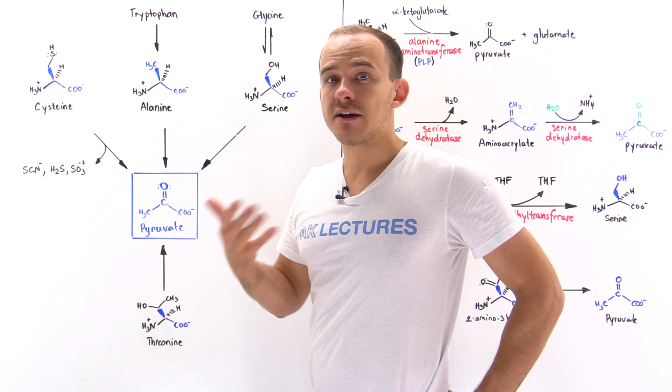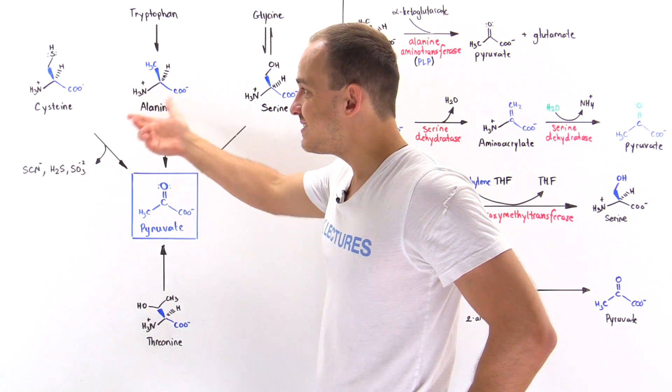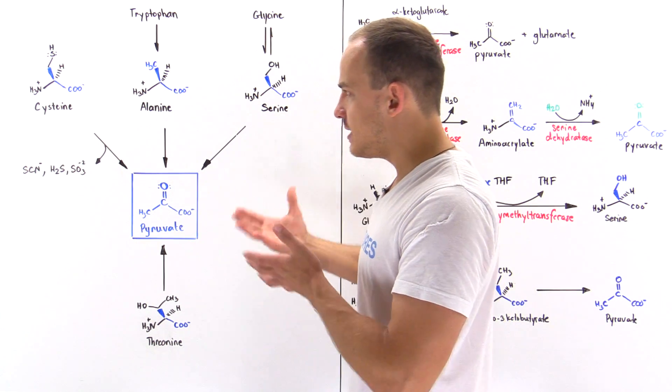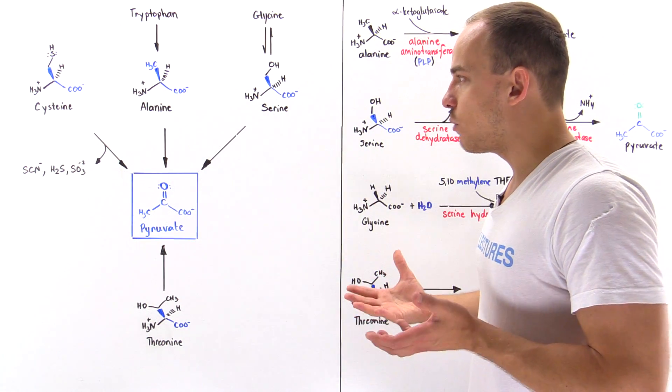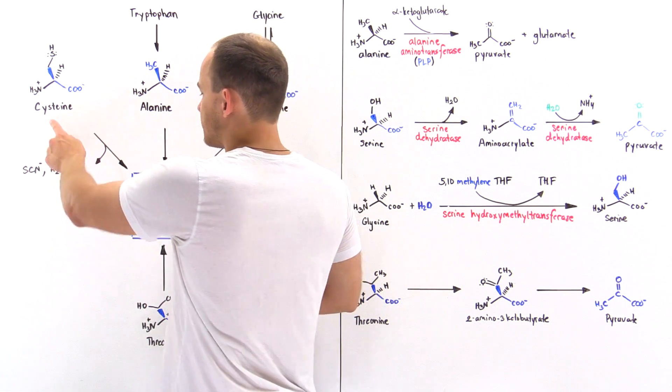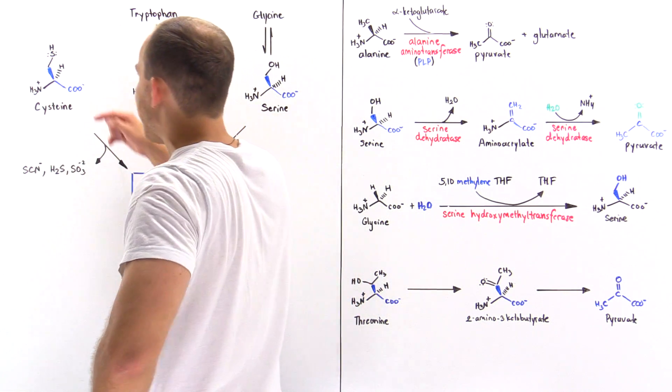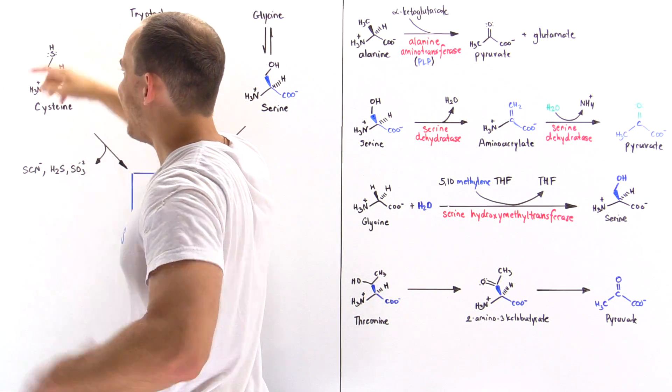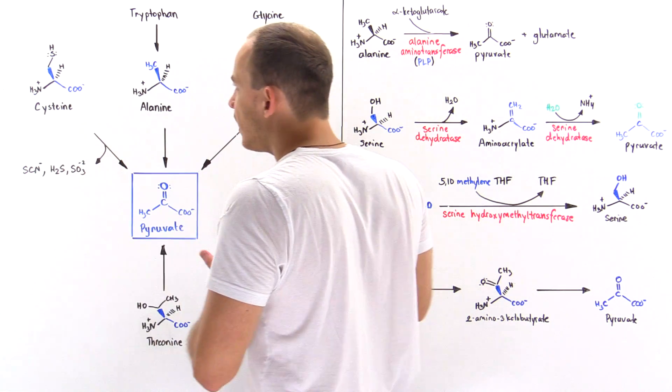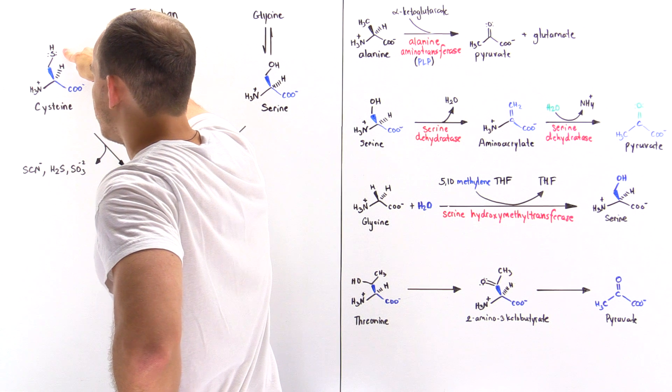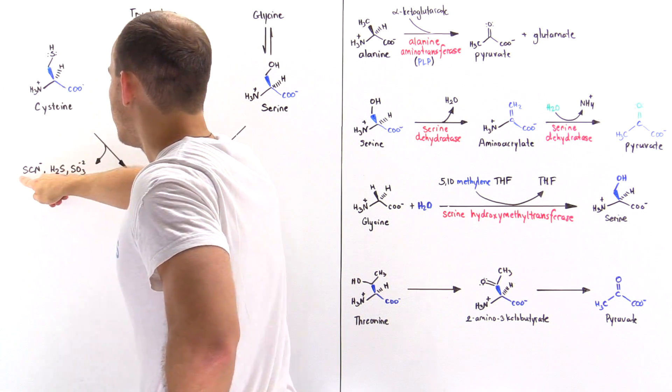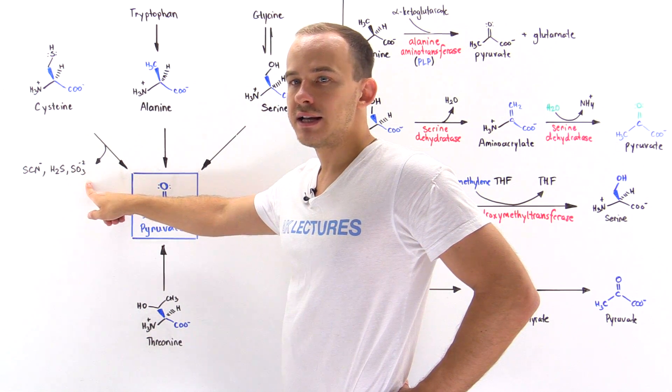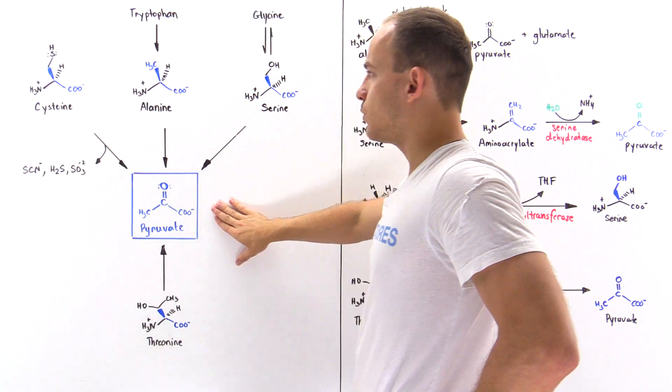But I will mention that in the conversion of cysteine to pyruvate, we have to somehow remove this sulfur atom. So depending on the pathway that is followed, that sulfur atom is released as either thiocyanate, hydrogen sulfide, or sulfur trioxide, and we ultimately form the pyruvate.